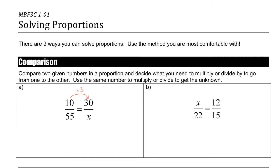And now that multiplying pattern for the top numbers will be the same for the bottom numbers. So I just continue the pattern x is equal to 55 times 3, which gives me a final answer of x equals 165.